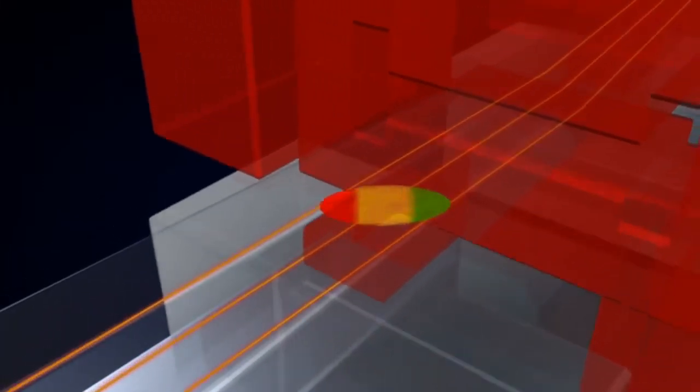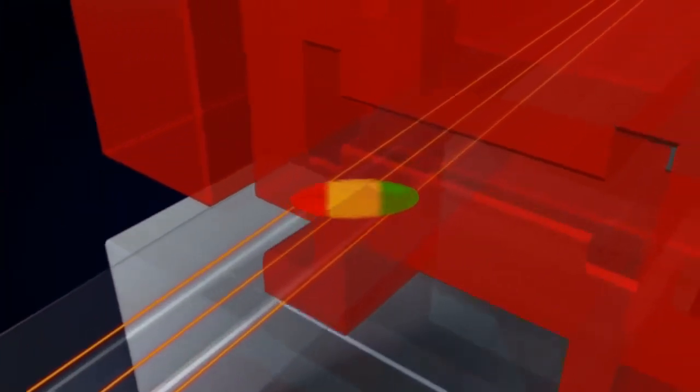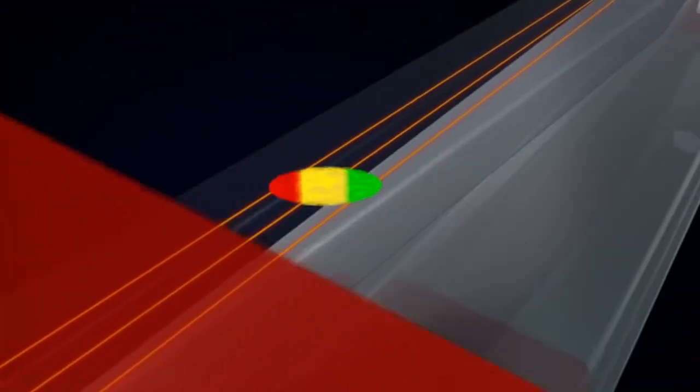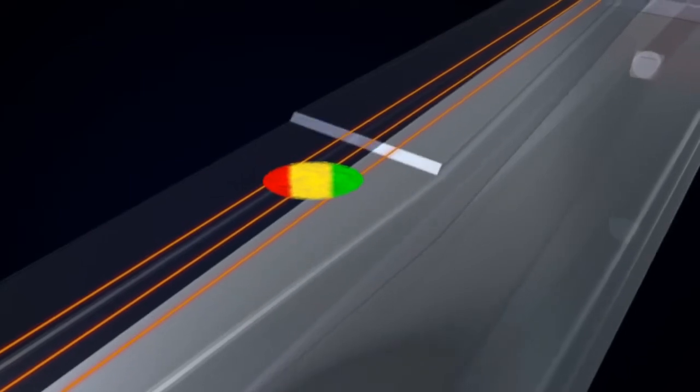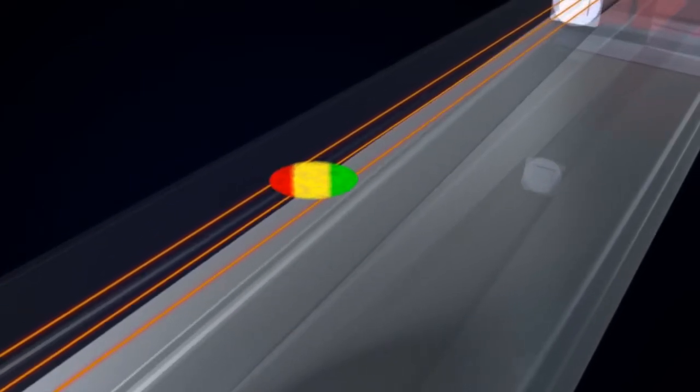The electrons in the inside lane of the chicane catch up with the electrons in the outside lane due to the shorter distance they have to travel. The electron bunch is compressed.